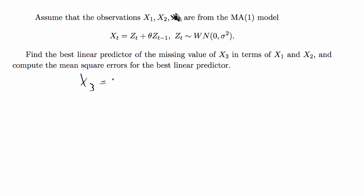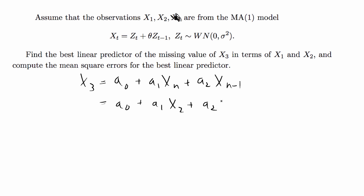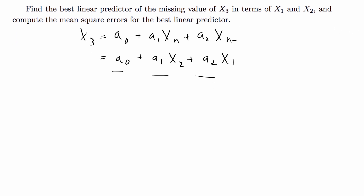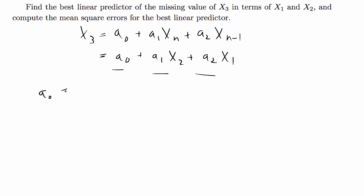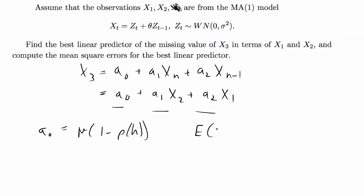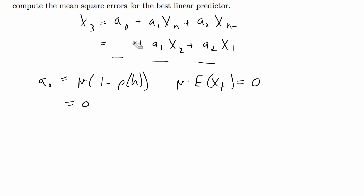The general formula would be x3 equal to a0 plus a1*x2 plus a2*x1, and we have to solve for a0, a1, and a2. The formula for the intercept a0 is mu times 1 minus the autocorrelation function at lag h. For the moving average 1 model, the expected value mu equals zero, so a0 is zero. You do have to prove it before moving on, but really we just have to find a1 and a2.